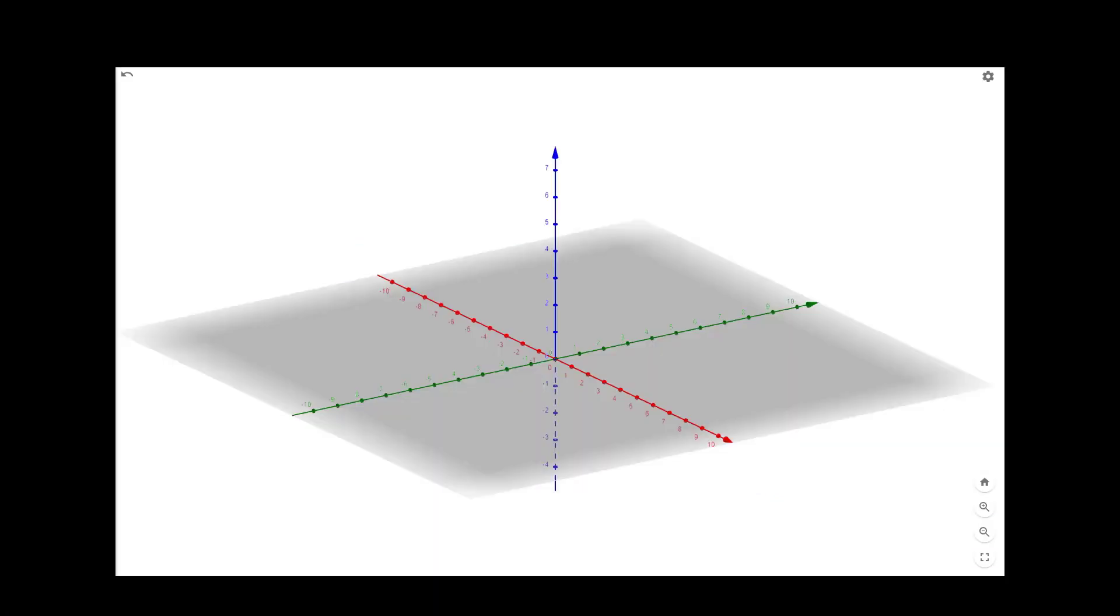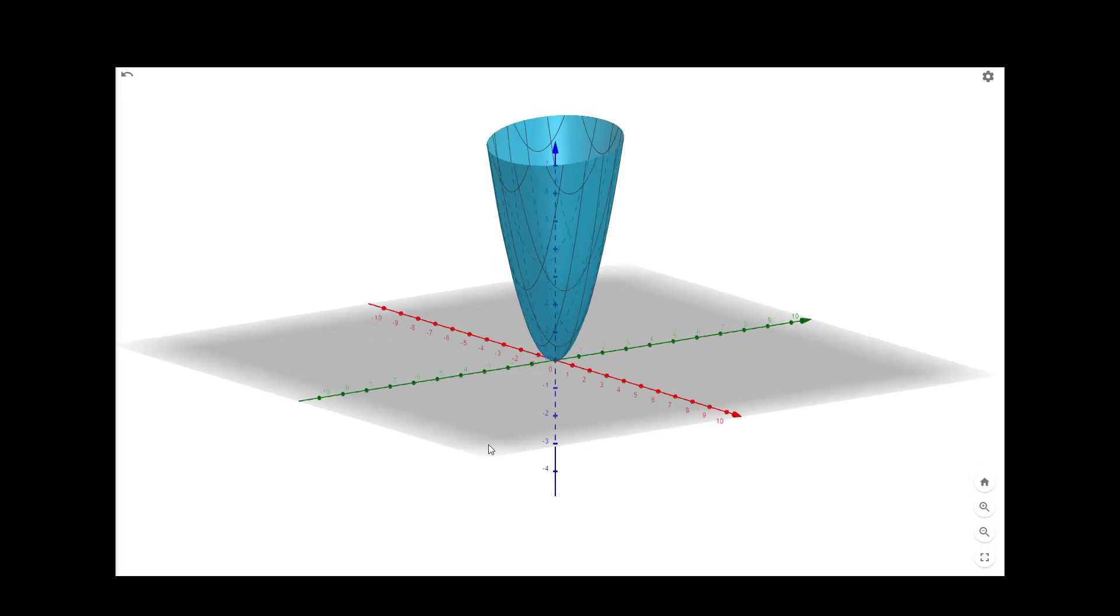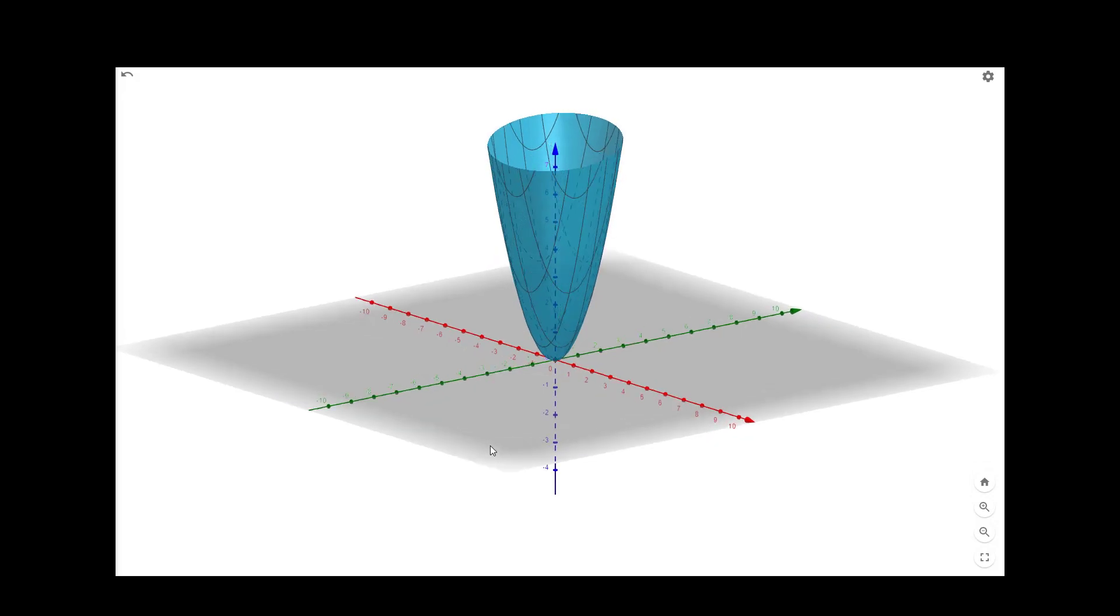The graph of the function x square plus xy plus y square will look like this. You can clearly see that it is passing through origin and it is always a positive function.